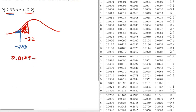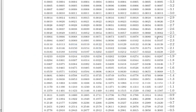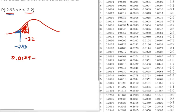0.0139. And now what I'm going to do is subtract the area to the left of negative 2.93. So I'll go back to my probability table and look up negative 2.93, and I find that that is 0.0017. So I'm going to subtract 0.0017.